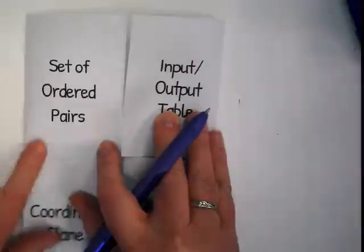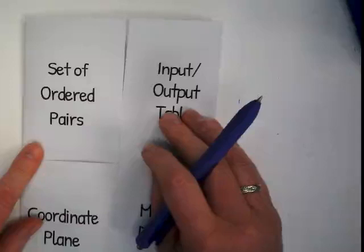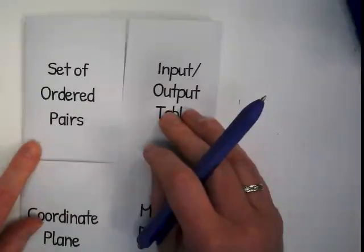Okay, set of ordered pairs is where we're going to start. These are four different ways that we can show relations.